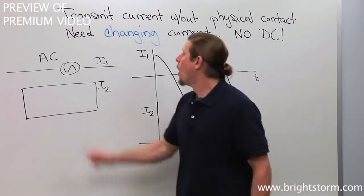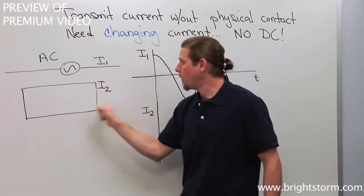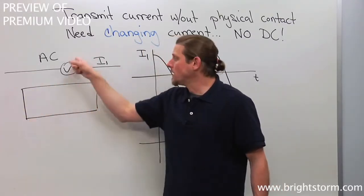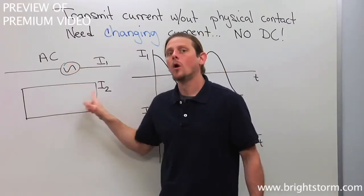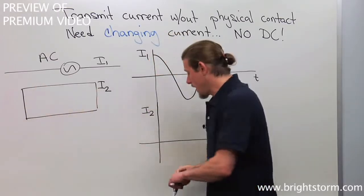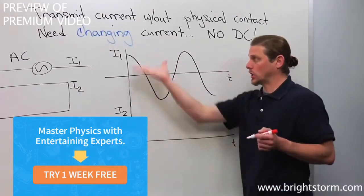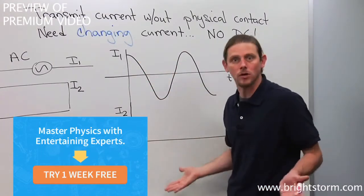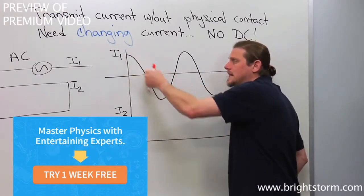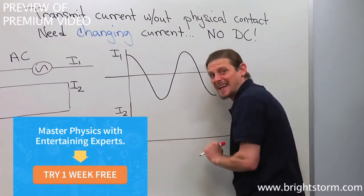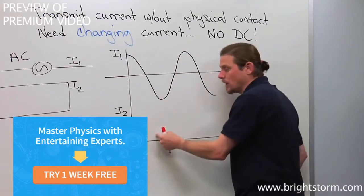Here's the idea: when this current is increasing to the right, the generated current will be counterclockwise. When this current is decreasing, the generated current down here will be clockwise. If we look at a graph of alternating current, it looks like a cosine function — that's what they look like. When this current is decreasing, this induced current should be negative. When this current is increasing, this induced current should be positive.